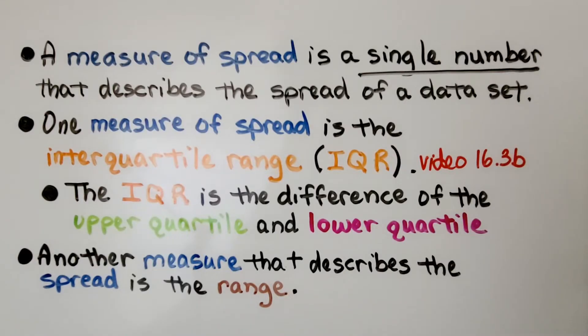A measure of spread is a single number that describes the spread of a data set. We learned in the last video, 16.3b, that one measure of spread is the interquartile range, the IQR, and the IQR is the difference of the upper quartile and the lower quartile. Another measure that describes the spread is the range.